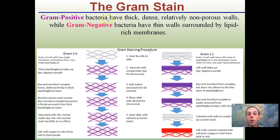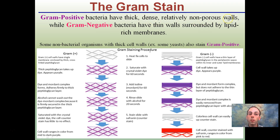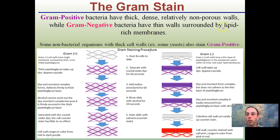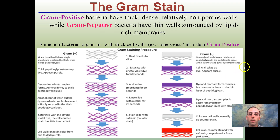Gram positive bacteria have thick, dense, relatively nonporous walls, while in comparison gram negative bacteria have thin walls surrounded by lipid-rich membranes. Think of lipids as kind of repelling things. This is a detailed procedure — I'm going to go through it step-by-step.